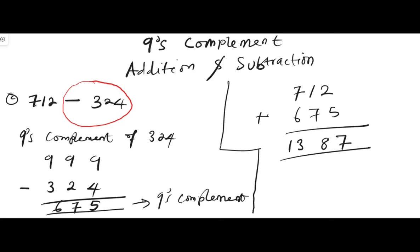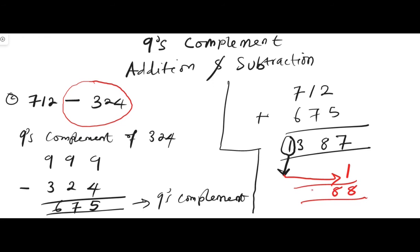We now have four digits but we started with three, so there is a carry. Whenever there is a carry in nine's complement, you bring the carry down and add it to the remaining digits: seven plus one is eight. So the final answer is 388. This is the answer to 712 minus 324 using nine's complement.